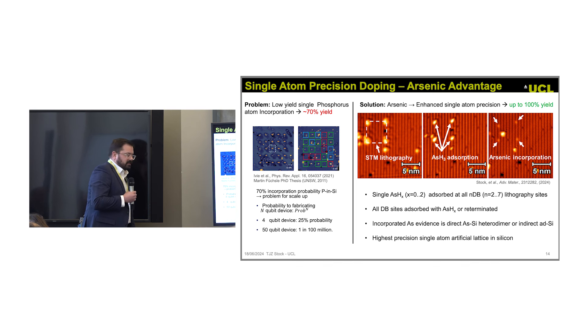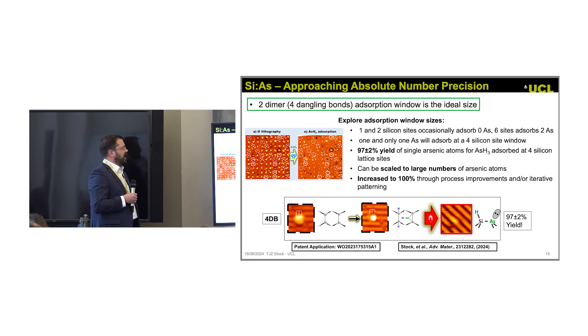This works because the chemistry is different for arsene. What we found is that if you make a four-silicon lattice site in the resist, you always absorb a single moiety of arsene, which is the precursor. And every single time you heat it up to incorporate, you get one arsenic atom. This can be pushed up to 100% yield. In the paper, we cite 97 plus or minus 2%, but there's a way to push this to 100. We've got a patent application on this one.